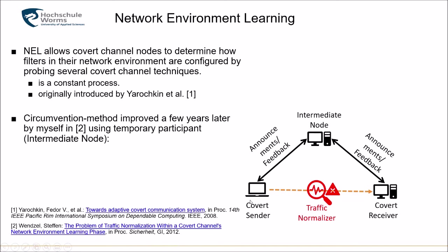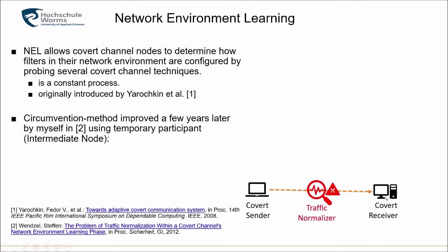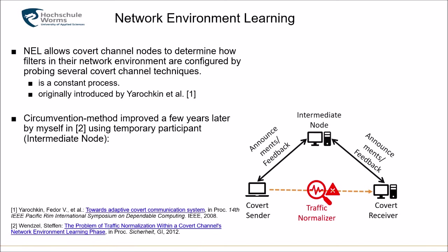The receiver provides feedback over the intermediate node back to the covert sender, so they know exactly which packets go through. Without an intermediate node, if the firewall blocks the feedback message from receiver to sender, the covert sender does not know which message arrived. This is the so-called two-army problem — you don't know whether a message was dropped going sender-to-receiver or receiver-to-sender. This can only be solved with the intermediate node, which is only used temporarily and then removed.